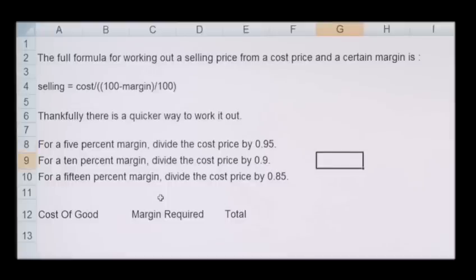If you want a 10% margin, it's simply 1 minus 0.1, so you divide your cost price by 0.9. And similarly for a 15% margin, you do 1 minus 0.15, you divide your cost price by 0.85.